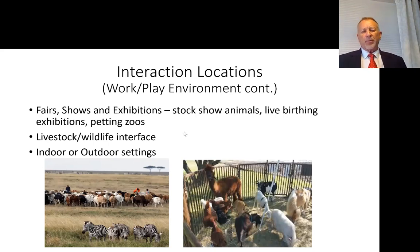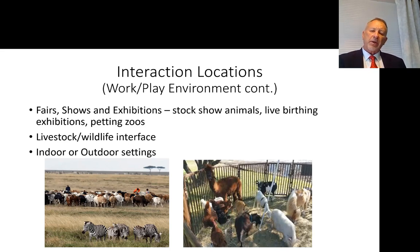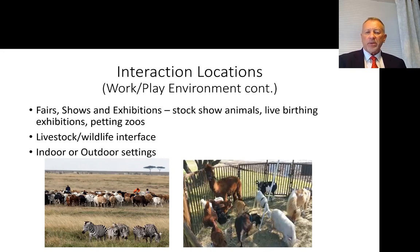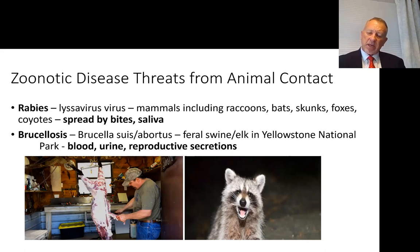The livestock-wildlife interface is another important setting — zebras near cattle in Africa illustrate how disease can get from wildlife to domestic animals and then to their human caretakers. At fairs, shows, and exhibitions, some of the most common ways zoonotic diseases spread are live birthing exhibitions. There's now an entire protocol on the public health side helping fairs and exhibitions that want to do petting zoos or live birthing exhibits, including hand washing stations and educational information provided outside the pens.